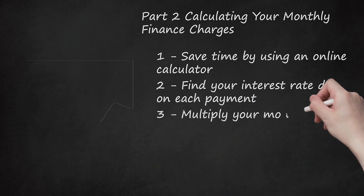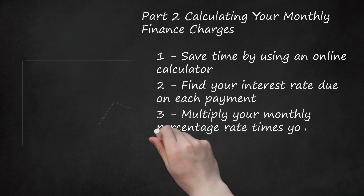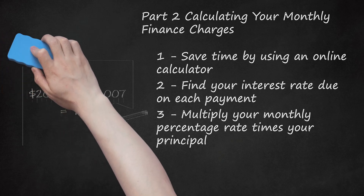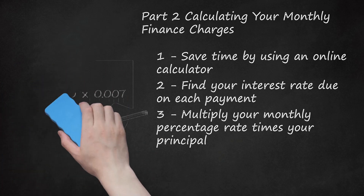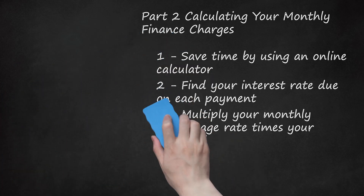Step 3: Multiply your monthly percentage rate times your principal. If, for example, your principal were $20,000 — meaning you borrowed $20,000 to buy your car — you would multiply this by 0.007 from the previous step and get $140.